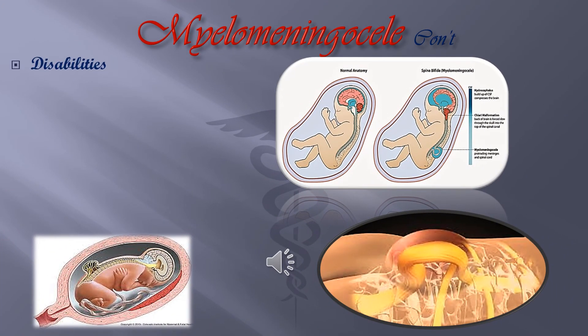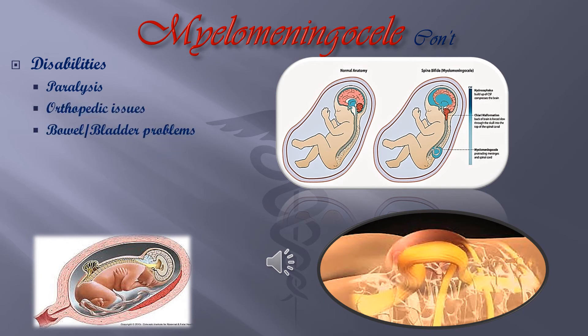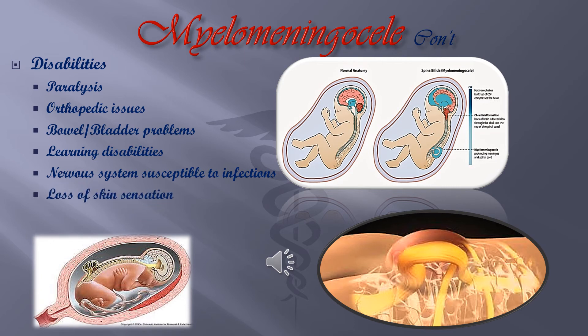Visible signs of Myelomeningocele include: paralysis, orthopedic issues, bowel and/or bladder problems, learning disability, nervous system susceptibility to infection, loss of skin sensation, and sexual impotence in adults.